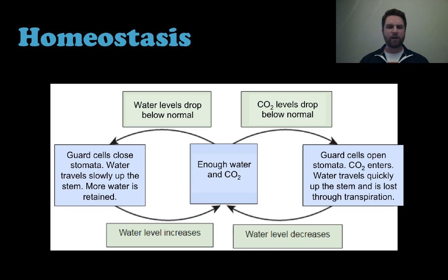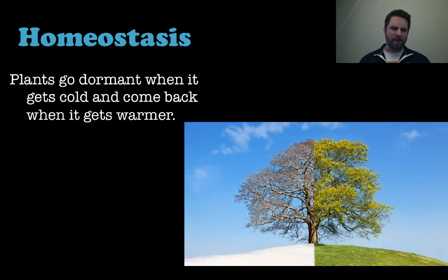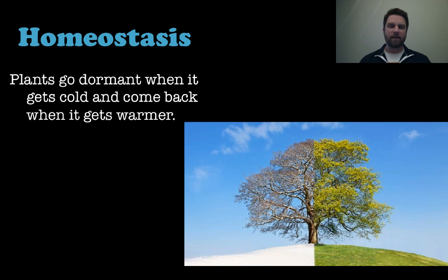This chart looks at homeostasis — what happens when water levels drop below normal, CO2 levels drop, or water increases or decreases, and everything that follows. Take some time to understand this figure-eight negative feedback system and how transpiration plays into it. Finally, plants maintain homeostasis by going dormant when it gets cold — that's why plants lose their leaves, and they come back when it warms up. The plant does this to conserve energy, since there's no point carrying out photosynthesis if conditions aren't right.